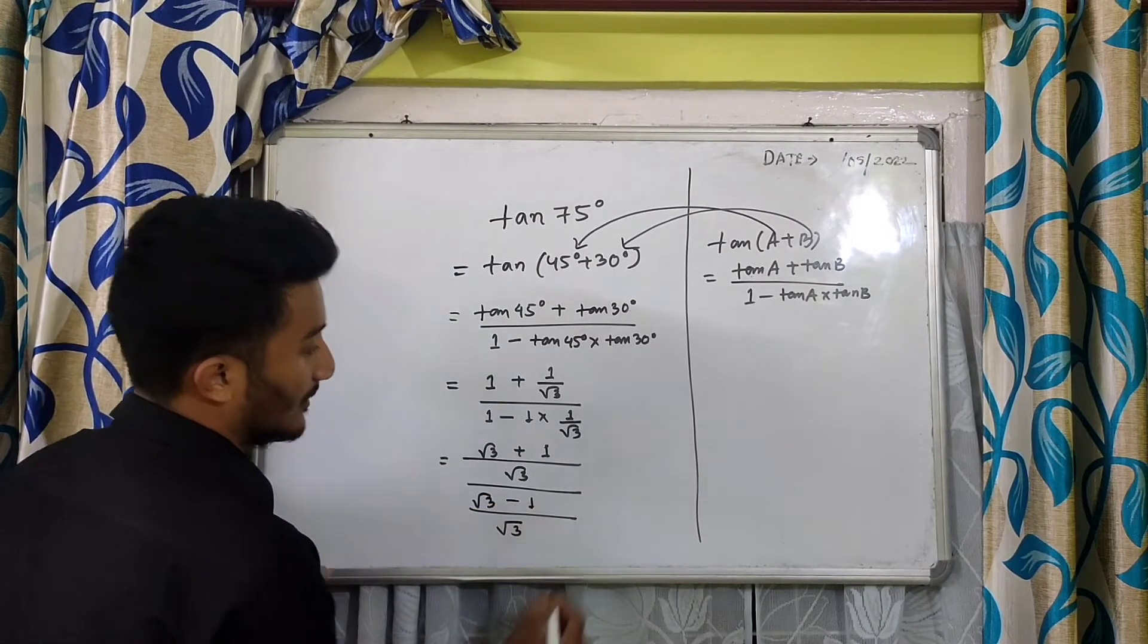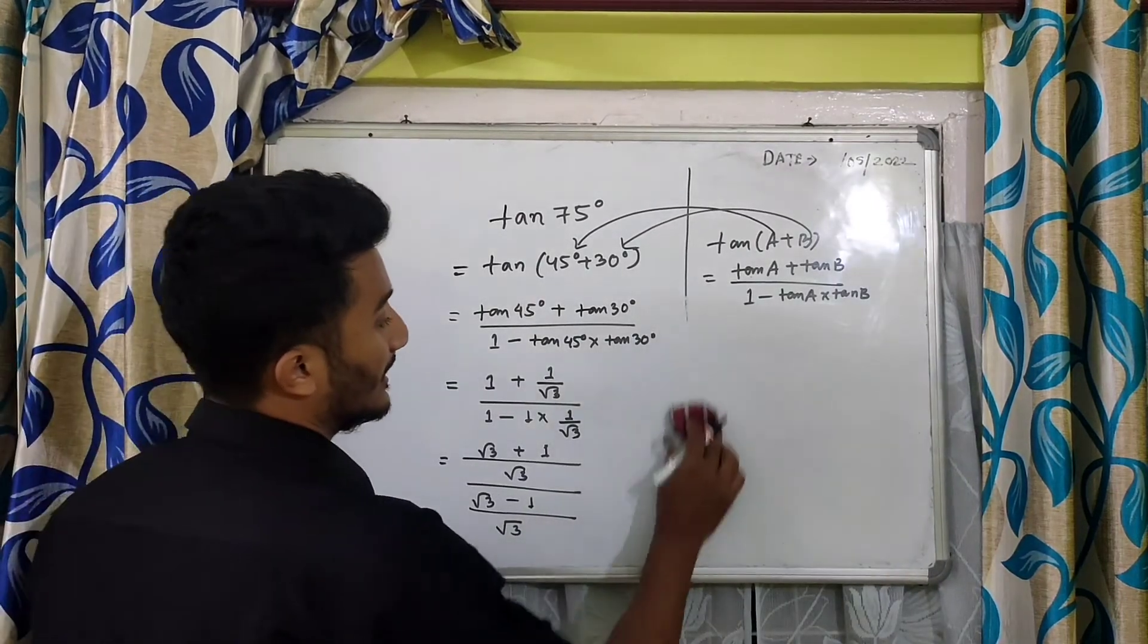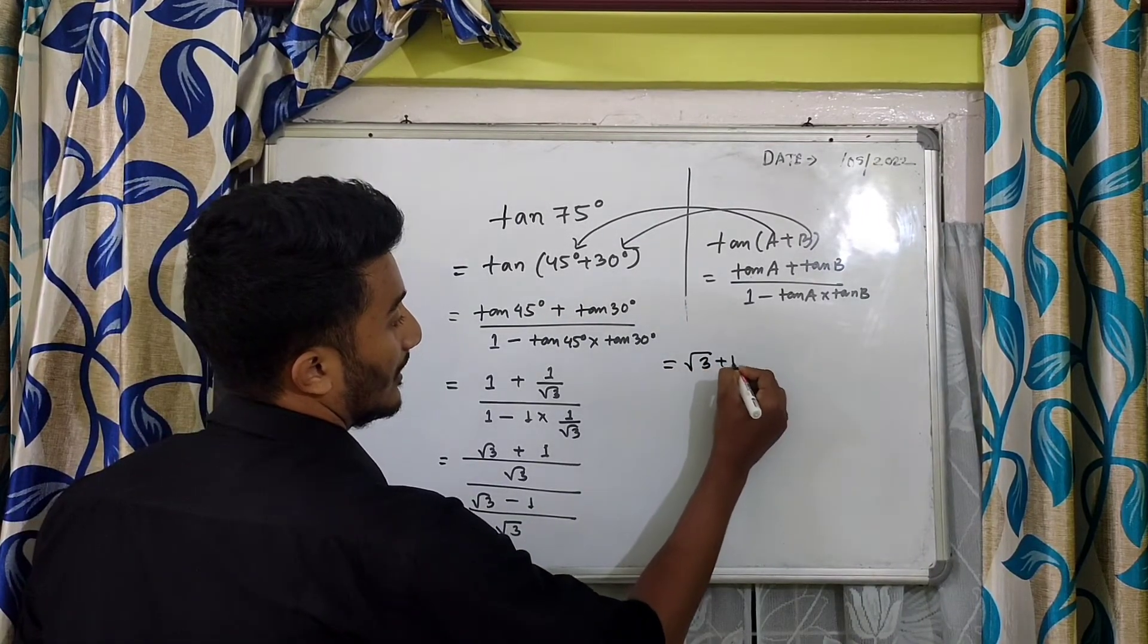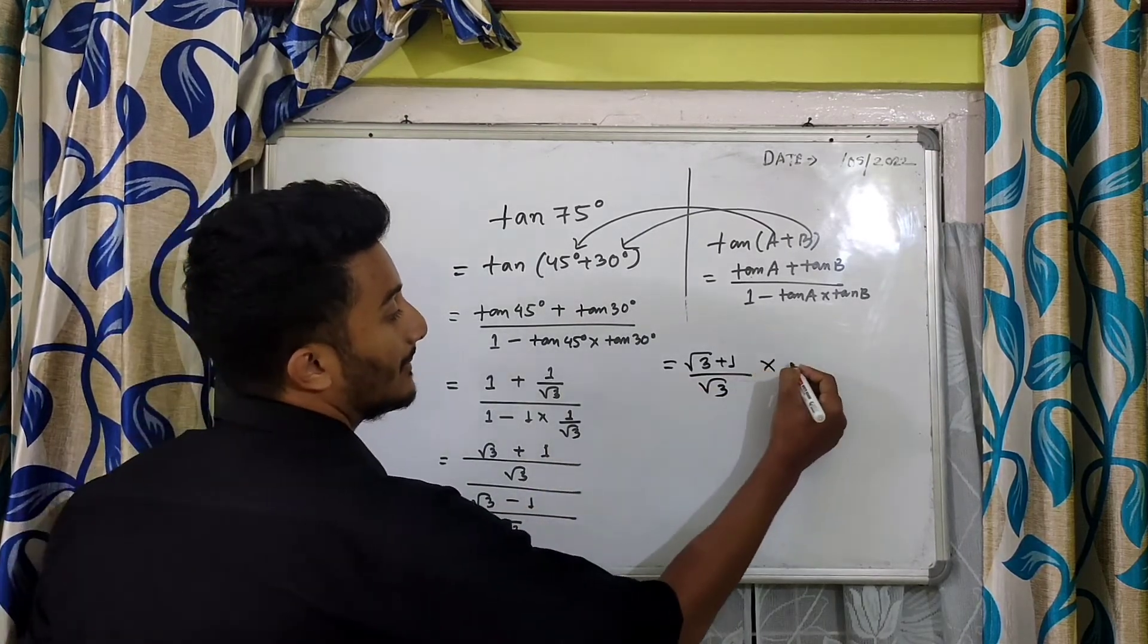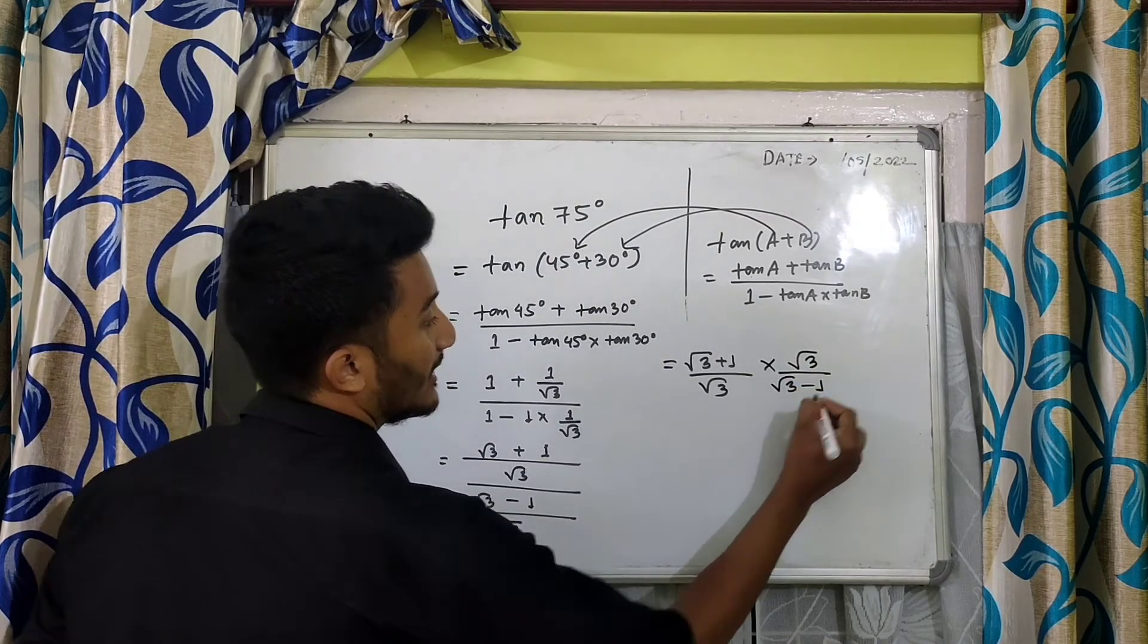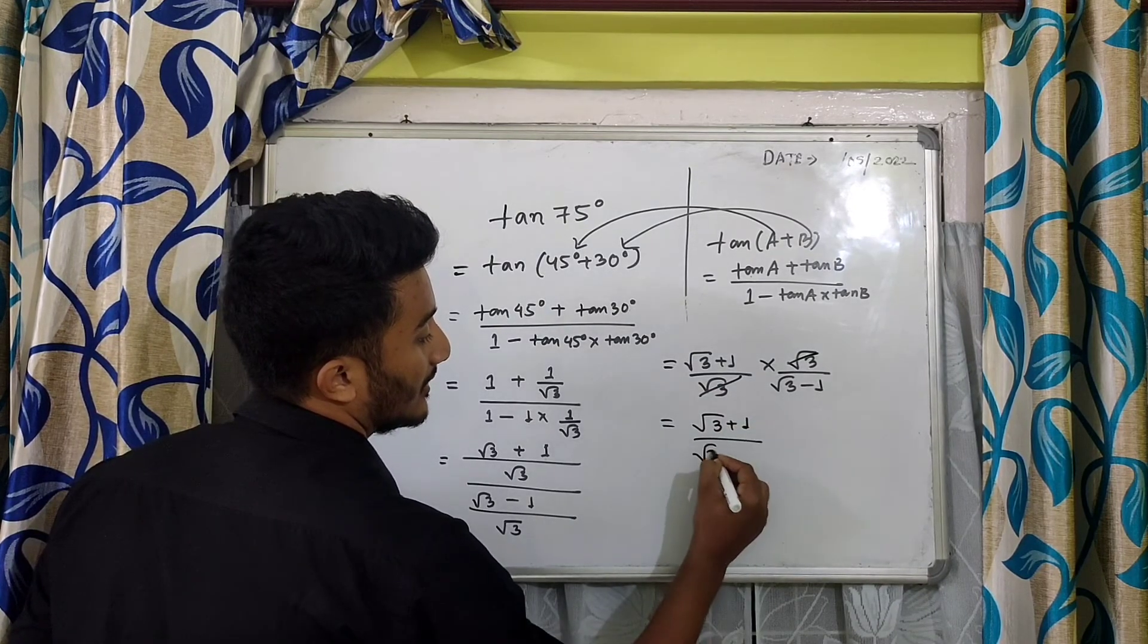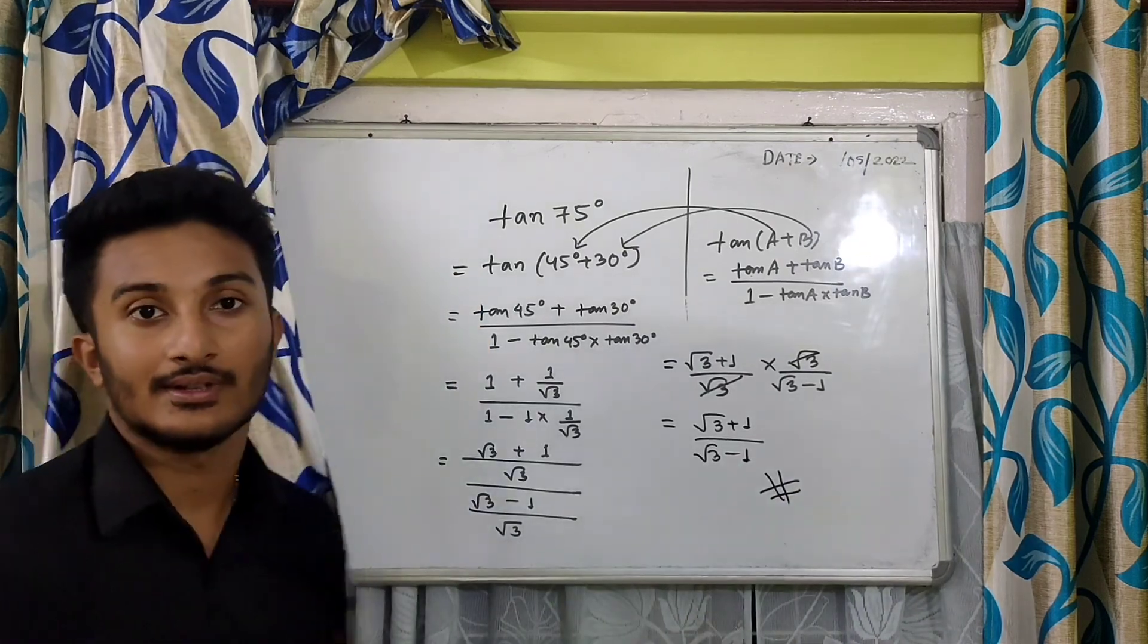This will be root 3 plus 1 over root 3 minus 1. In the next step, when this portion comes apart, it will be multiplication. So we will write down this in this way. Now we can cancel root 3 and root 3, and we will be getting the answer. So this is the value of tan 75 degrees.